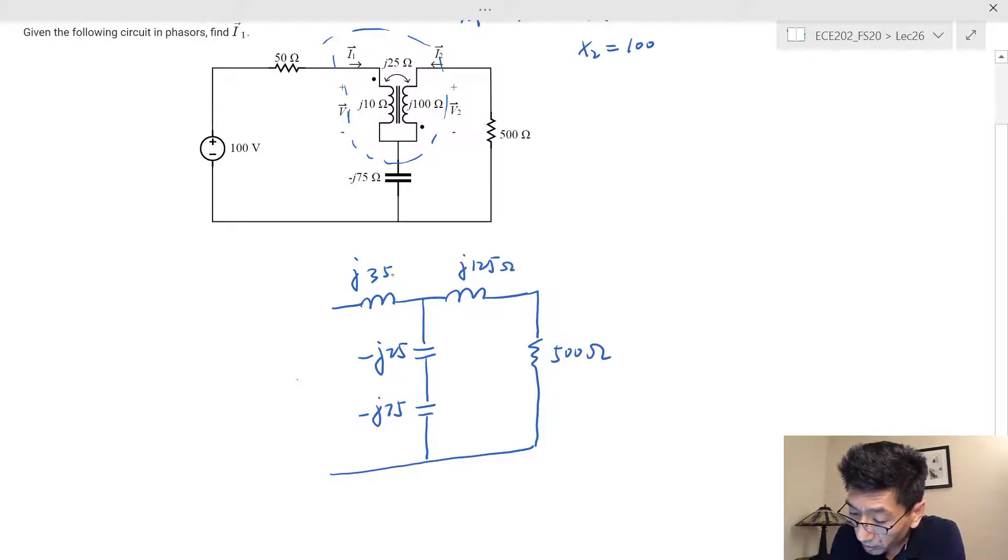All things in ohms. We have 50 ohms here and we have 100 volts here. This is 50 ohms, and the current i1 is still here. That's the current we're trying to find.